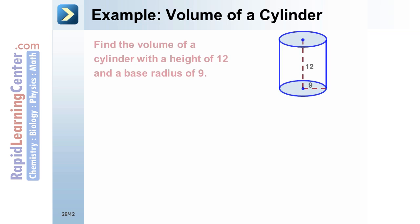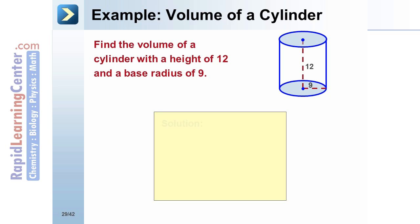Example: Find the volume of a cylinder with a height of 12 and a radius of 9. Substitute the given values into the formula: V equals pi times 12 times 9 squared. Simplify to get the volume of the cylinder, which is about 3,053.63.